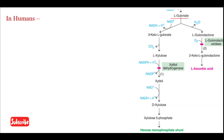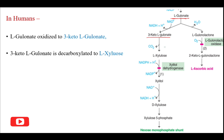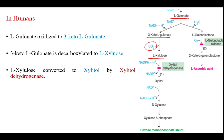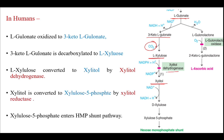In humans, the fate of L-gulonate is that it is oxidized to 3-keto-L-gulonate. This 3-keto-L-gulonate is decarboxylated — carbon dioxide is removed — to form L-xylulose. L-xylulose is converted to xylitol by xylitol dehydrogenase, and xylitol is converted to xylulose-5-phosphate by xylitol reductase.